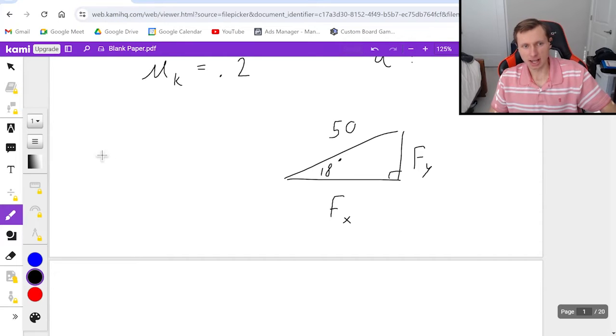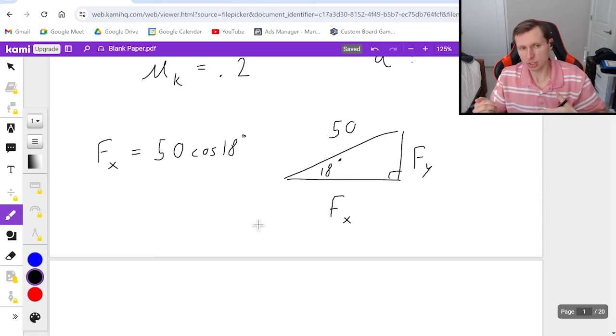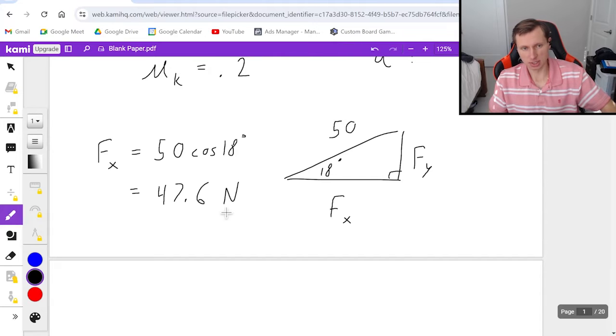So hopefully you know how to do this by now. If I want to find f_x, it's going to use cosine of 18 degrees because it's the adjacent leg. So it would be 50 times cosine of 18 degrees. And that's because cosine is adjacent over hypotenuse and f_x is the adjacent side. And if you plug this in a calculator, then you'll get 47.6 newtons.